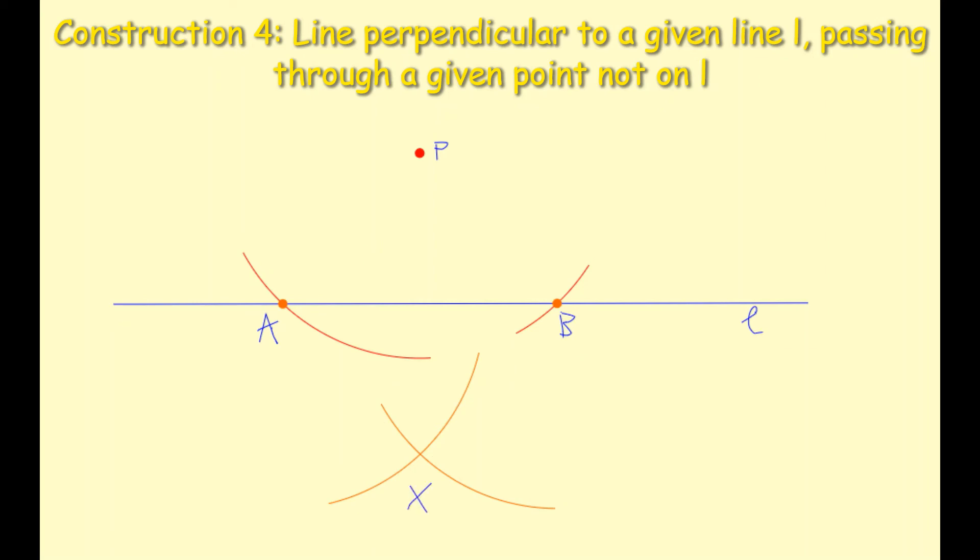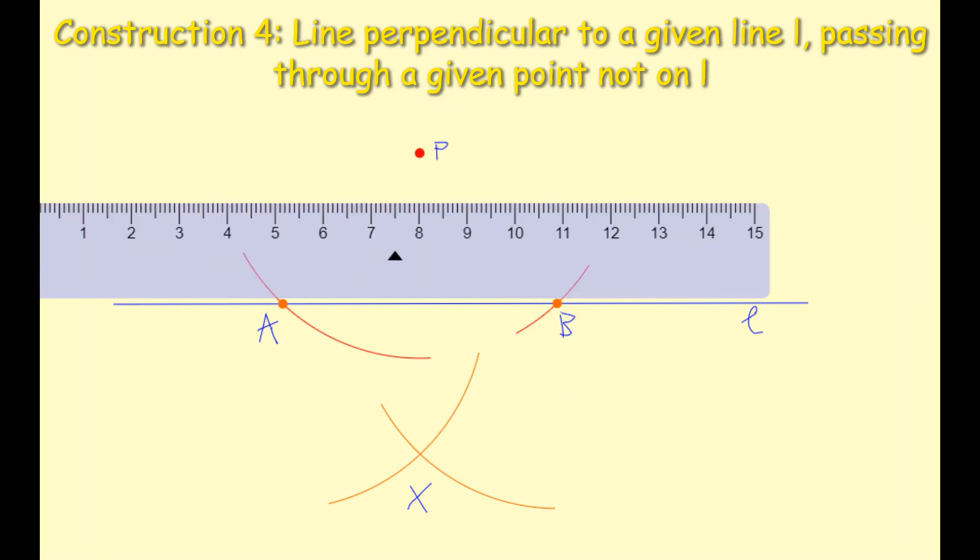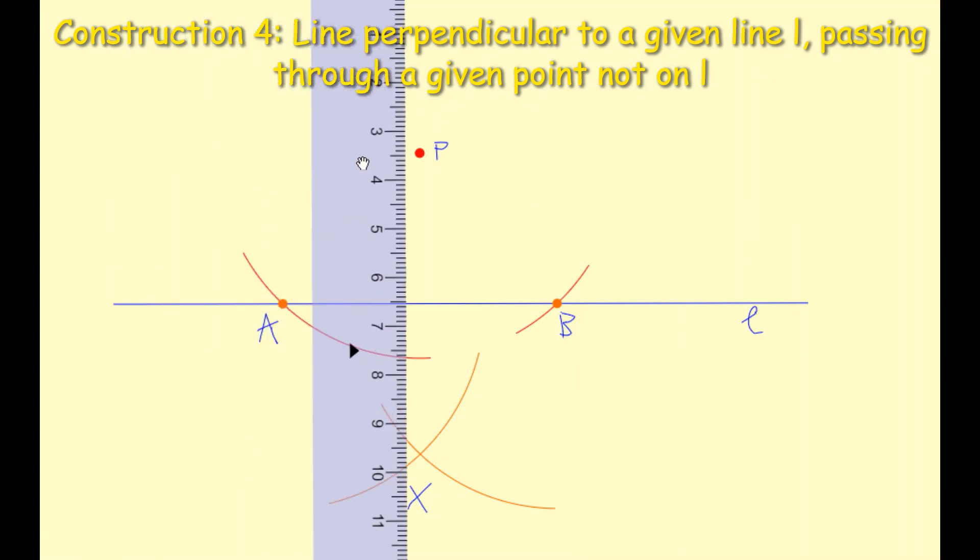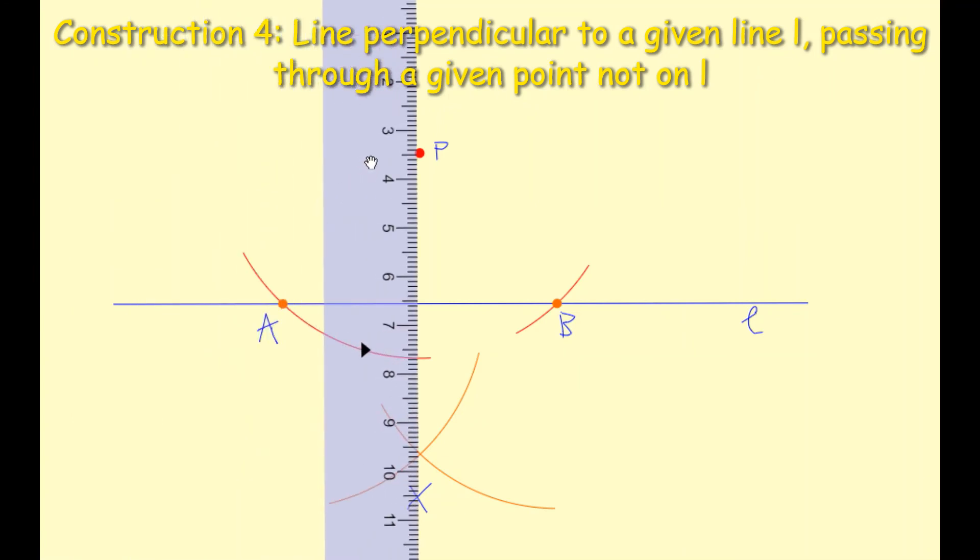So like I said with your ruler and your pencil we're going to connect the point P and the point X. So bringing it over to P should cross to the point X then with your pencil we draw a straight line down to P and down to X. We remove our ruler and you can see now that we have created a perpendicular line going through L.